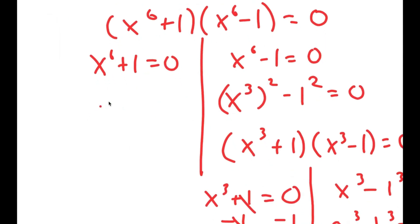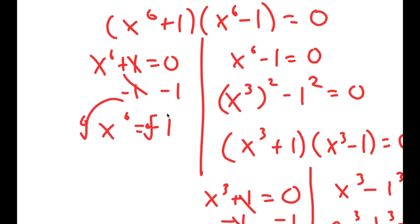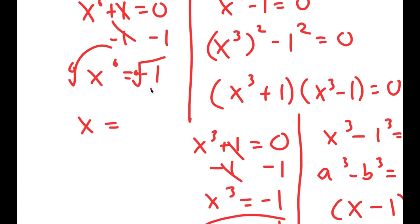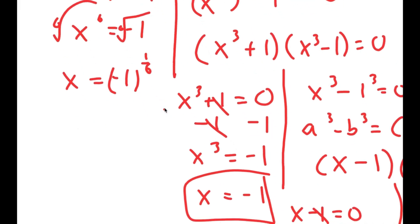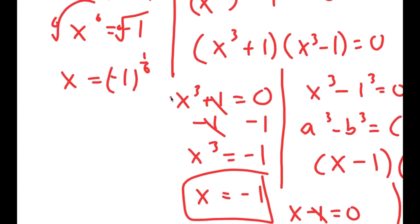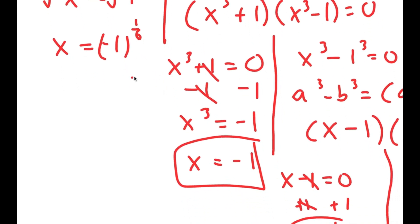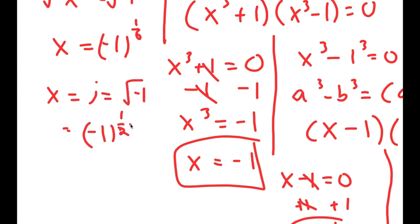For x to the power of 6 plus 1 equals 0, subtracting 1 on both sides gives x to the power of 6 equals negative 1. Taking the 6th root, I get x equals the 6th root of negative 1, which equals negative 1 to the power of 1 over 6. We know that i equals the square root of negative 1, which equals negative 1 to the power of 1 half.